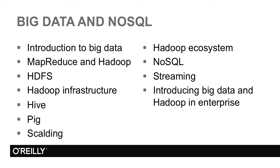After that, we are going to see the area of NoSQL, non-relational databases, its key categories and characteristics. Streaming is our next section, in which we are processing data in real time, and we will finish on how to introduce Big Data and Hadoop in the enterprise.